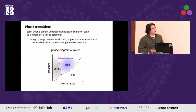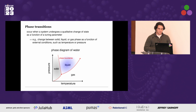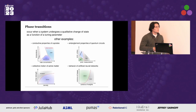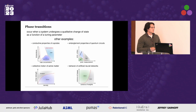Phase transitions are really ubiquitous and in our everyday lives we typically encounter them as changes between the three main phases of matter — solid, liquid, gas — as a function of external conditions such as temperature and pressure. Within a given phase, physical properties are largely constant, so characterizing a physical system really boils down to mapping out its phase diagram. More generally, phase transitions occur when a system undergoes a qualitative change of its state as a function of a control or tuning parameter, which makes this phenomenon truly universal, occurring in many different domains.